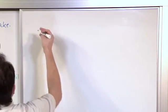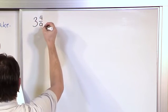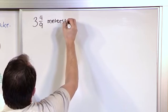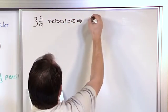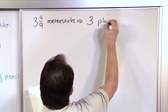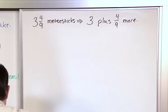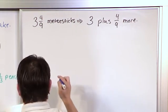So if I have three and four ninths meter sticks, for example, then what it means is I have three plus four ninths more. All right, three plus four ninths more. So if I wanted to draw this, then I would have to say...